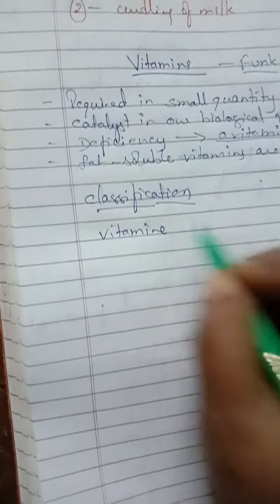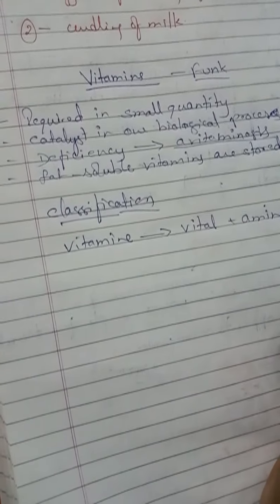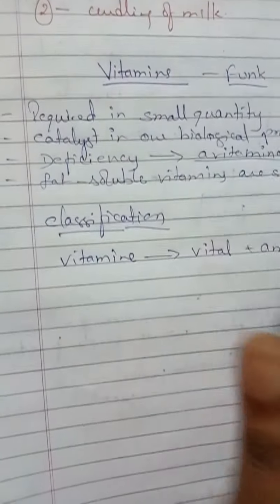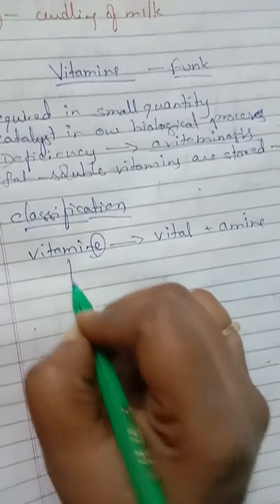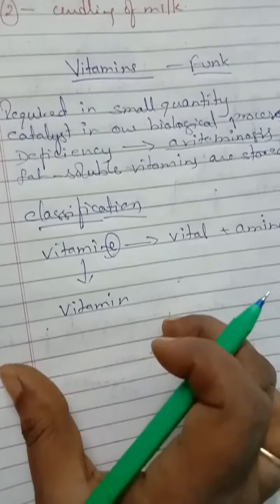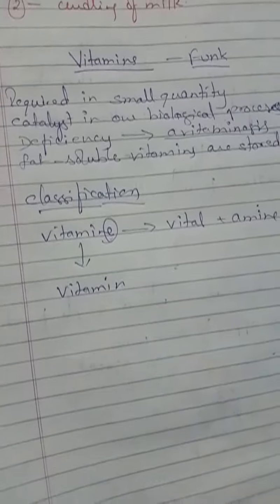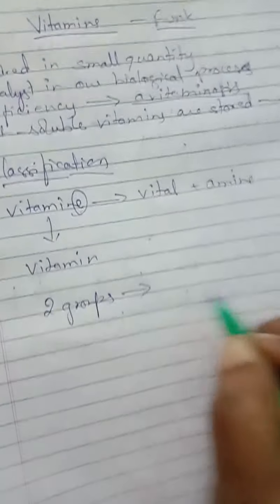The term 'vitamin' was coined from the words 'vital' plus 'amine.' 'Vital' means important and 'amine' means amino group. Later, research showed that most vitamins do not contain an amino group, so the letter 'e' was removed and it became 'vitamin.' Today we use the word 'vitamin.' Vitamins are classified into two groups based on their solubility in water and fat.